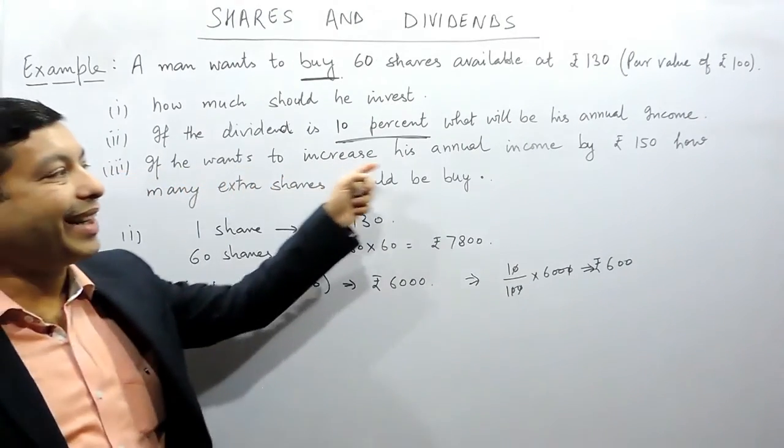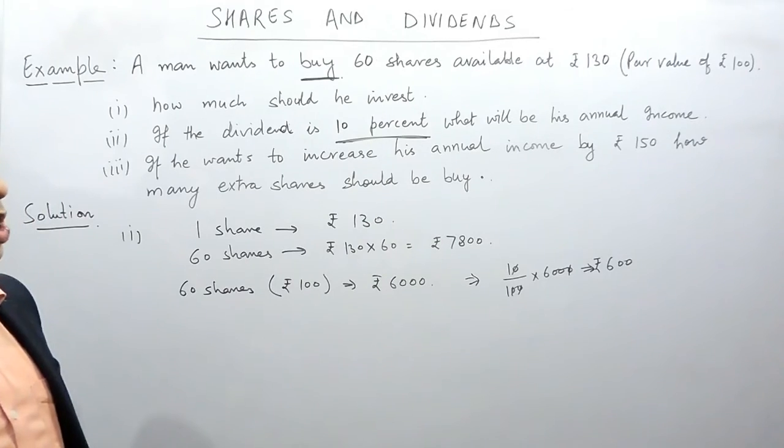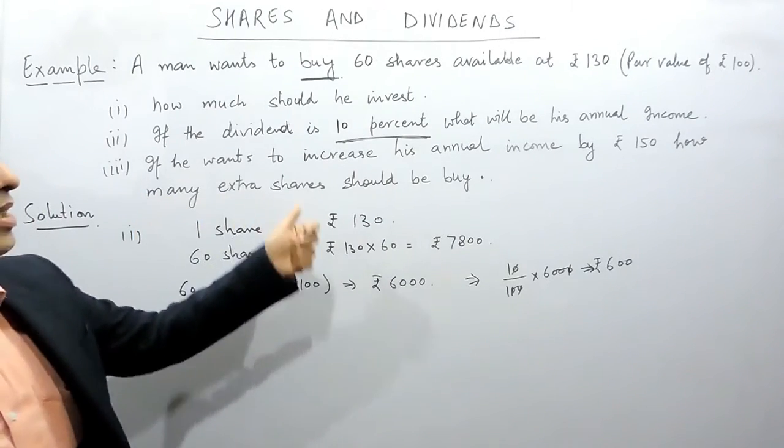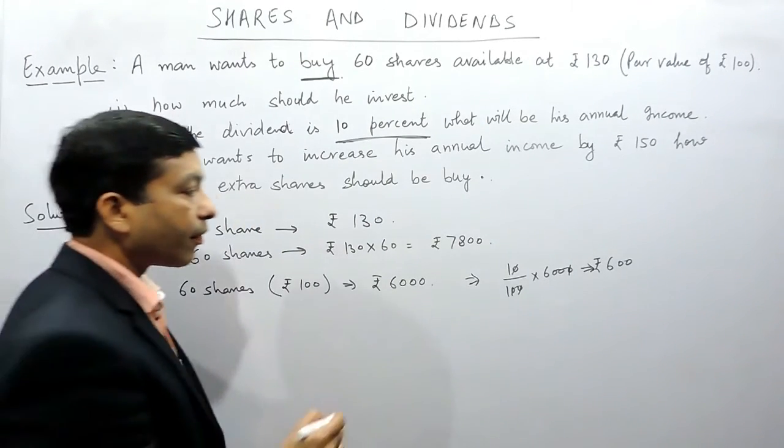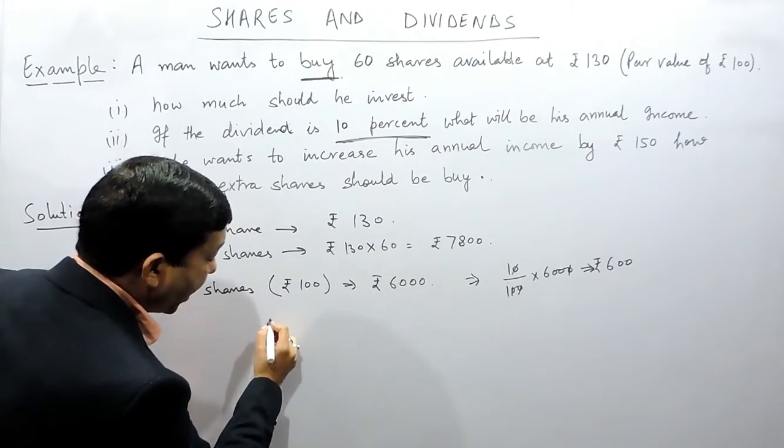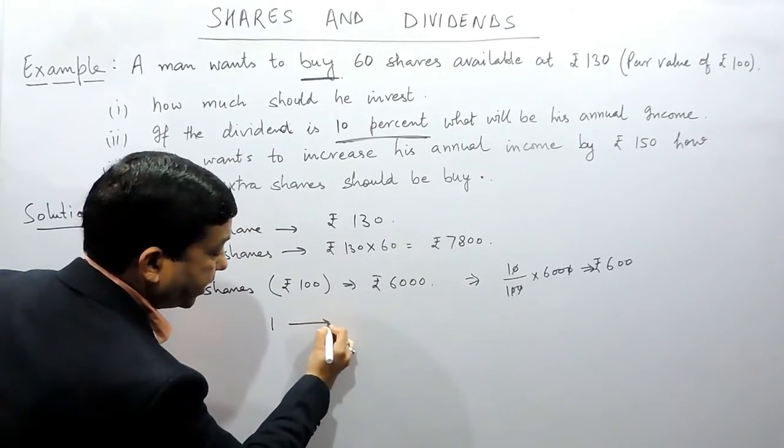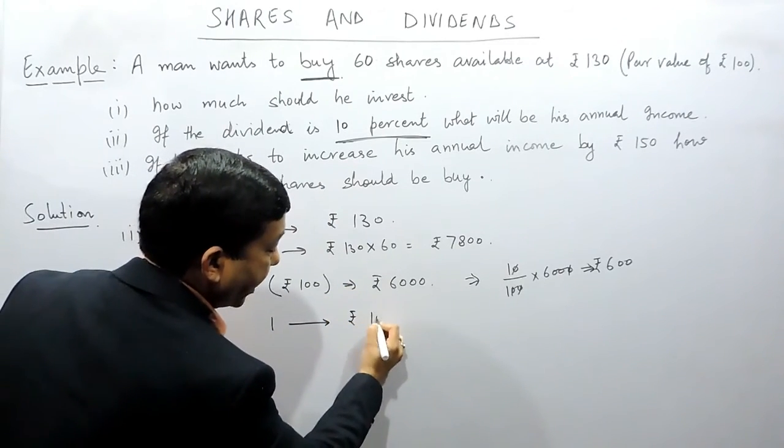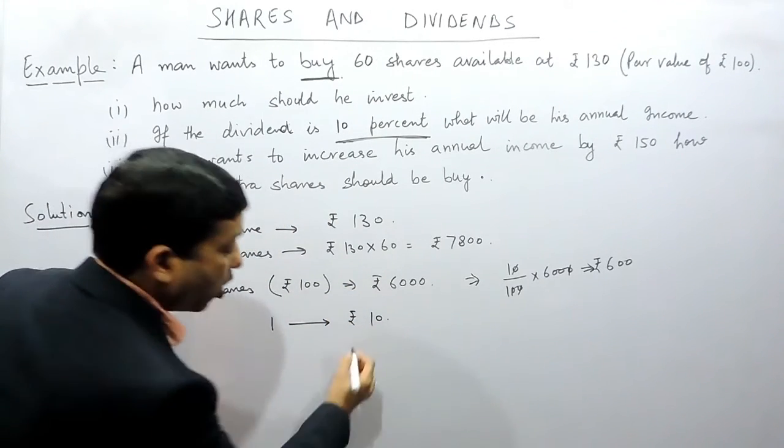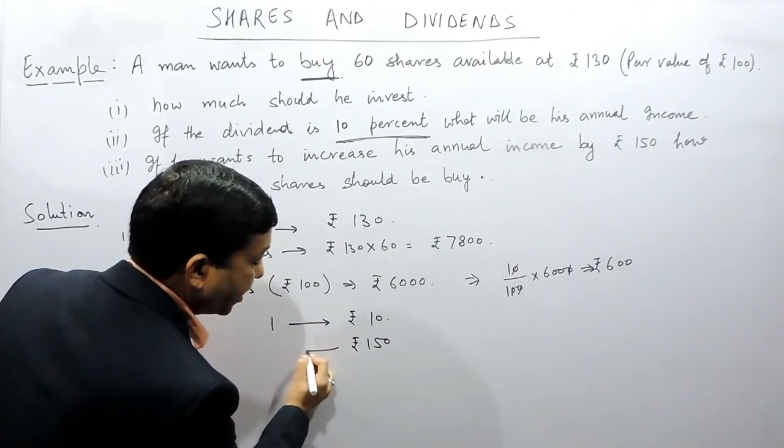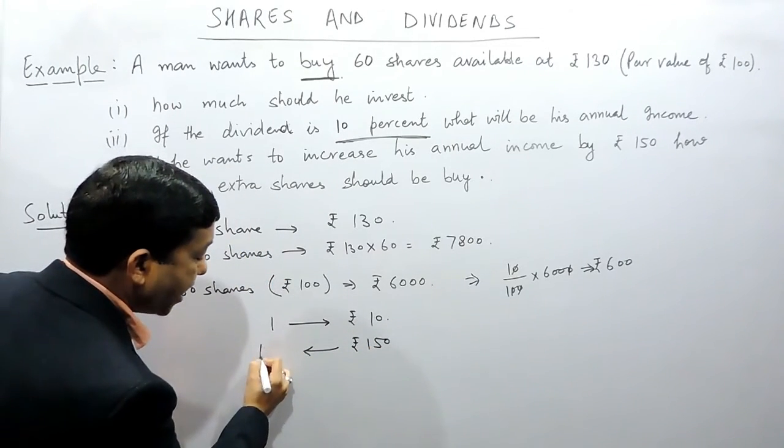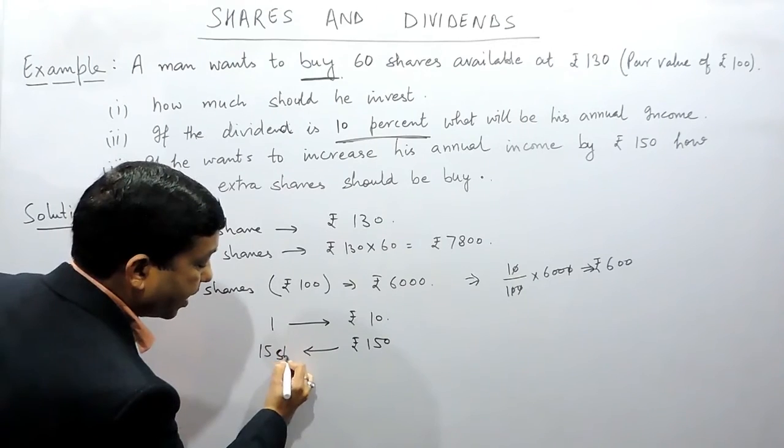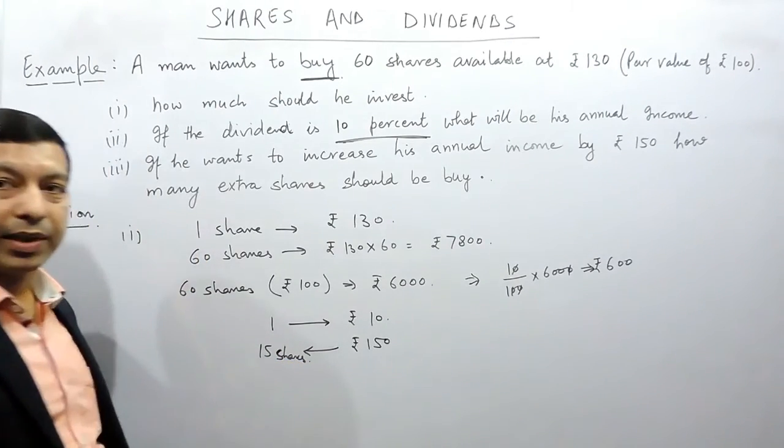Now the third part is: if he wants to increase his annual income by rupees 150, how many extra shares should he buy? Now suppose he buys one extra share, then his investment or the income will increase by rupees 10. If he wants to increase the income by rupees 150, it means he has to purchase 15 extra shares.